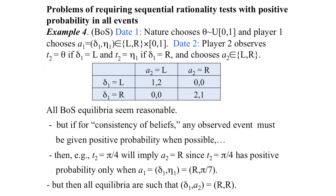So player two must believe with probability one that player one chose right. Then she chooses right to coordinate. When she chooses right and player one chose right, player one gets his favorite payoff of two. So player one knows: if he chooses right and eta equals pi/4, player two will choose right. The only equilibrium under this exercise is right-right.